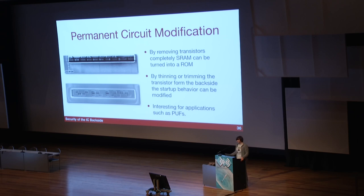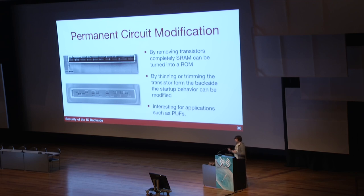Viele Leute sind sicher mit einem Elektronenrastermikroskop vertraut. Das FIB ist wie ein Elektronenrastermikroskop, nur mit Ionen. Man hat viel mehr Masse, und was man machen kann: man gibt Chemikalien in den Vakuumraum und stimuliert eine Reaktion mit Nanometer-Präzision. Man kann mit Gas Siliziumsubstrat wegätzen — und man kann sagen: bitte nur auf diesem 10×10 Nanometer Square reagieren.